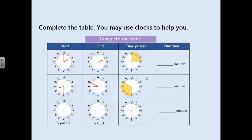Pause the video here and please make sure you have downloaded the worksheets from Class Charts or email. Complete the table using the clocks to help you. The start time is 2 o'clock, end time is quarter past 2 (15 minutes past 2), and the yellow shading shows how much time has passed — write down the duration. For the last one, draw the clock hands for 5 past 2 and 5 to 3, then find the duration.